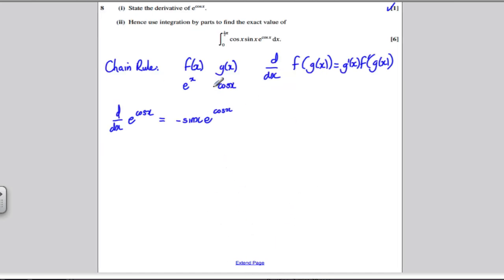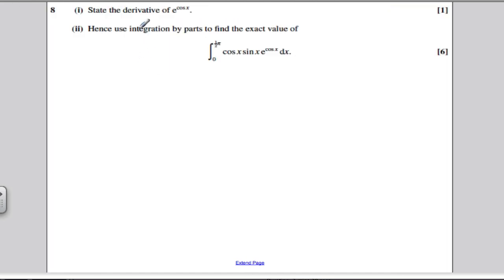Let's move to the next part. Hence, again keyword hence, we're going to use the fact that this derivative is minus sine x e to the cos x. We're definitely using that fact. Hence, use integration by parts to find the exact value of the following integral.